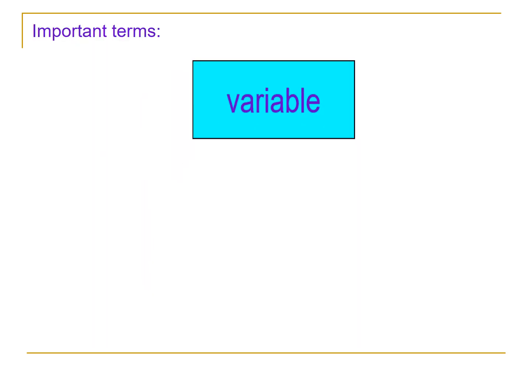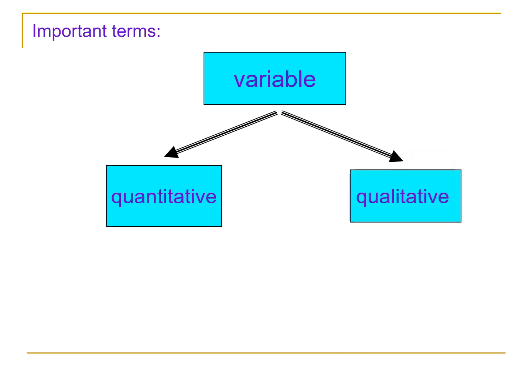The word variable in statistics is classified into two: the quantitative and qualitative variable.